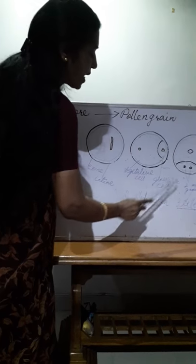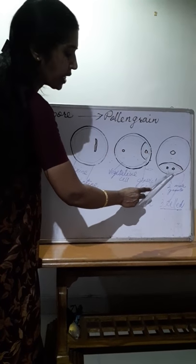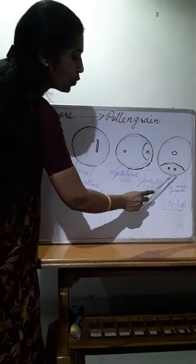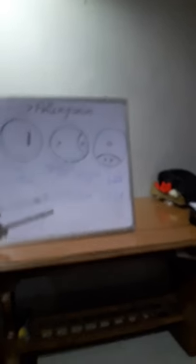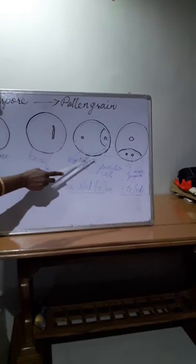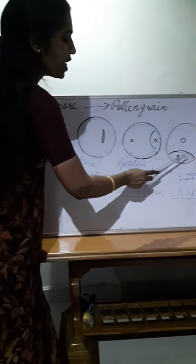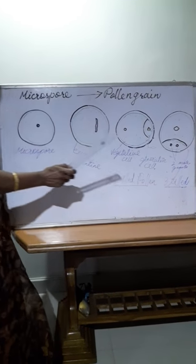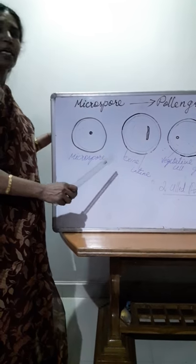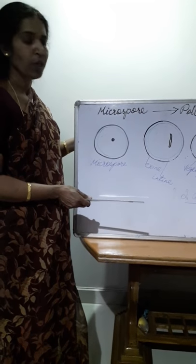Sometimes the generative cell undergoes mitotic division and produces two male gametes. Most plants remain in the two-celled pollen grain stage, but in some plants the generative cell divides to give two male gametes before dispersal. So the pollen grain may be dispersed as a two-celled or sometimes in a three-celled stage.